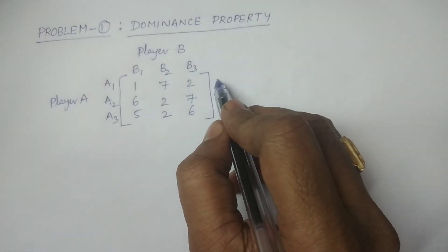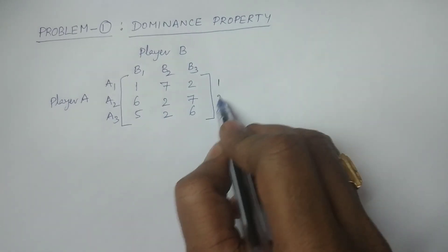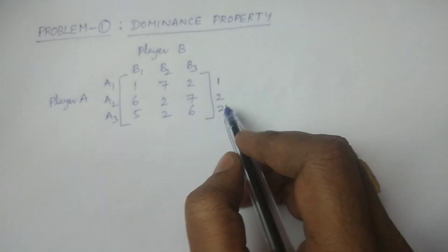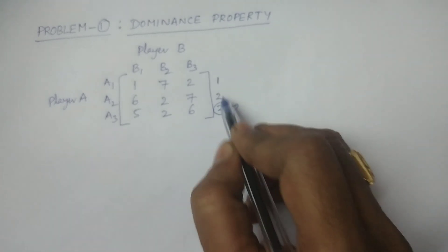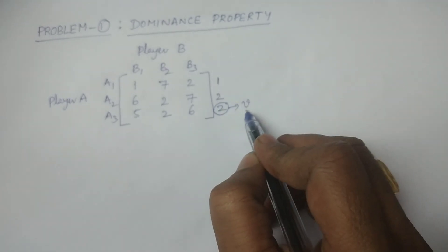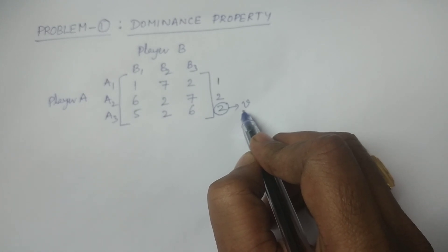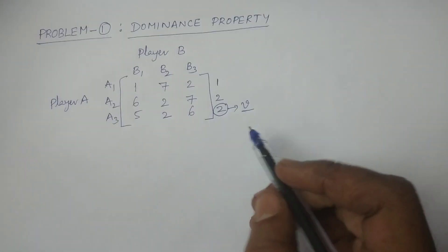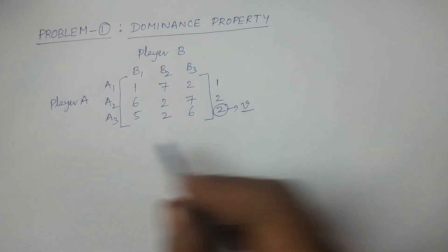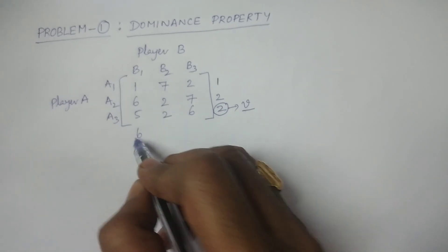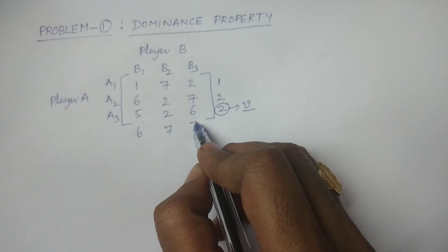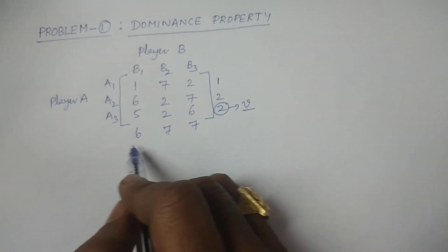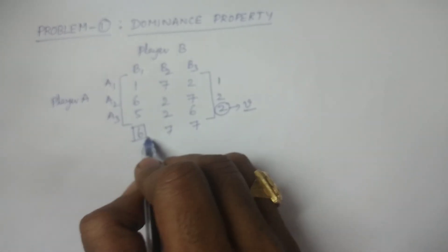Calculate row minima: first row minimum element is 1, second row 2, third row 2. Among these, calculate the maximum value — you have two same values so consider one value — that maximum value is denoted by me-underscore. Similarly, calculate column maxima: it is 6 for the first column, 7 for the second column, and 7 for the third column. Among these, calculate the minimum value, which is 6. This is the minimax value, denoted by mu-upper-score.